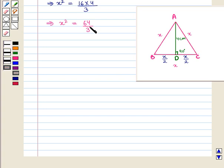Now taking positive square root on both sides we get x is equal to square root of 64 by 3, which implies that x is equal to 8 upon square root of 3.